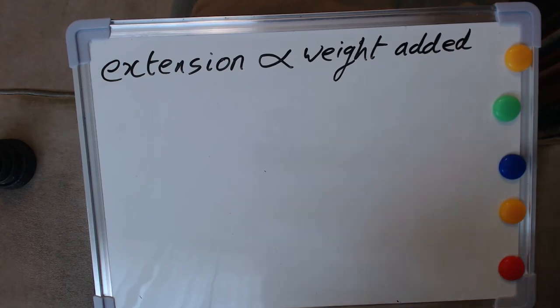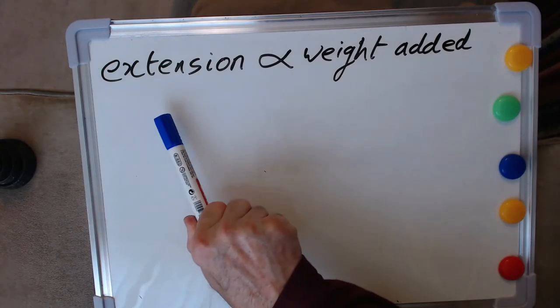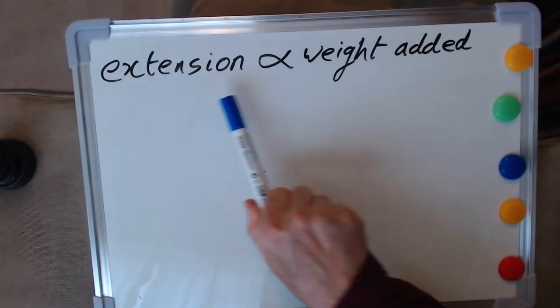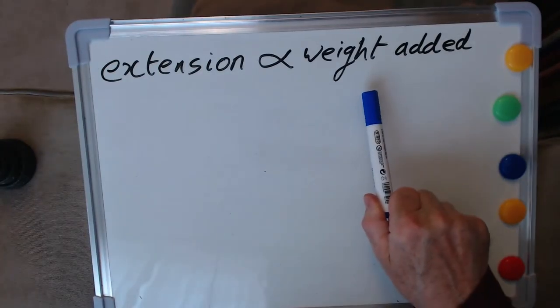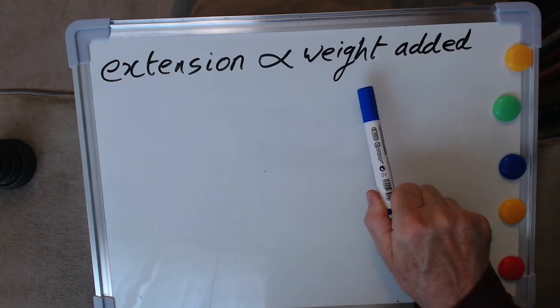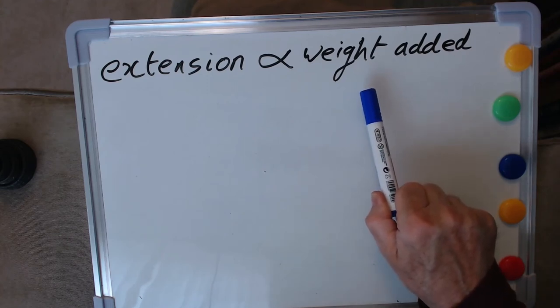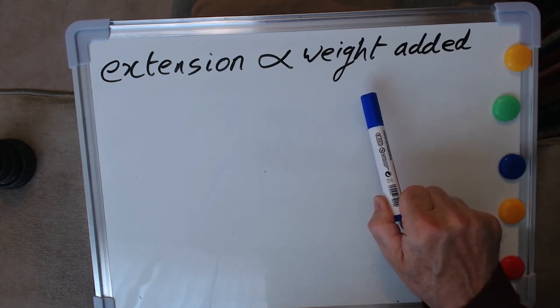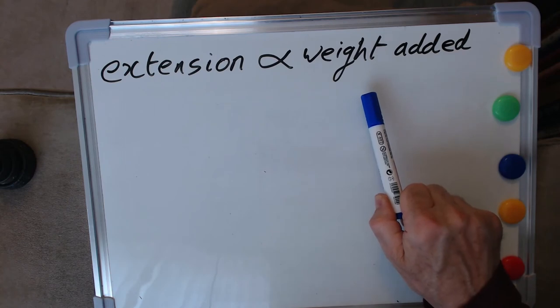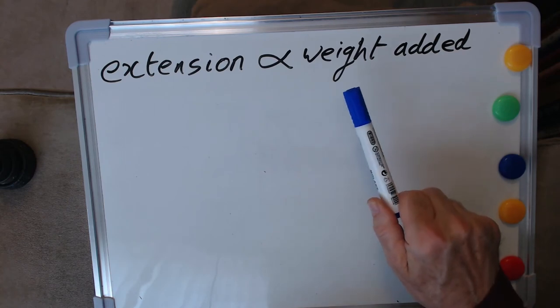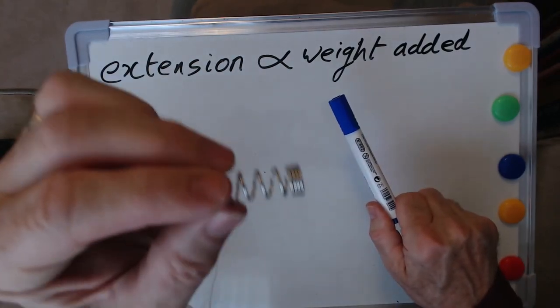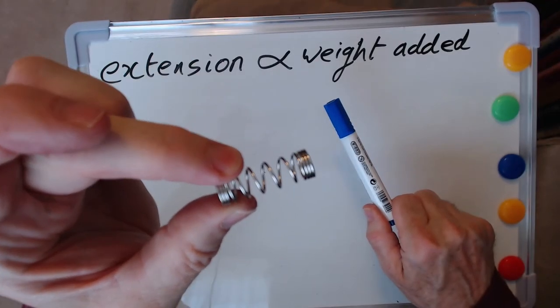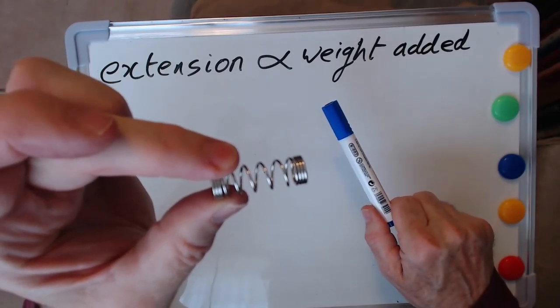Here then is our key relationship that we demonstrated: the extension is proportional to the weight that we added. In our case an elastic band in order to get an accentuated effect, but the classic experiment is to do it with a length of thin wire. We could also do the same thing with a common garden spring. If we hung this with weights on one end and gradually increased those weights, we would get again this sort of relationship.